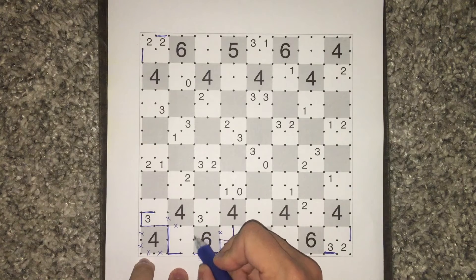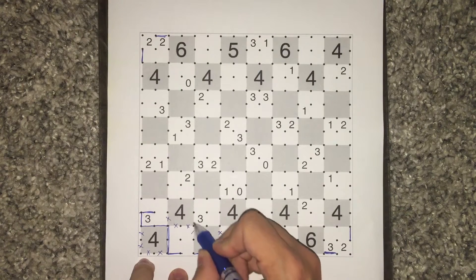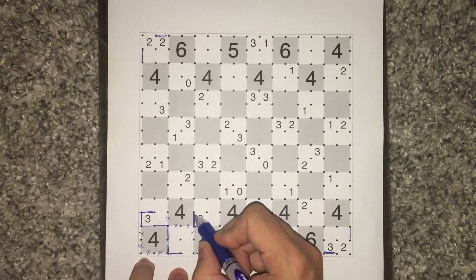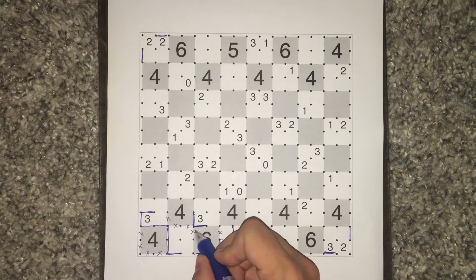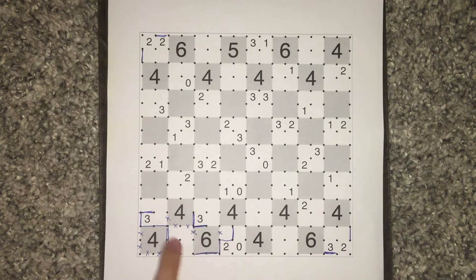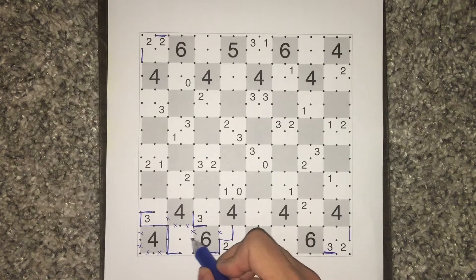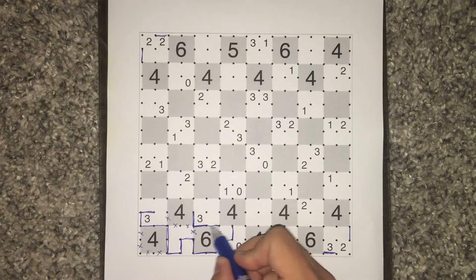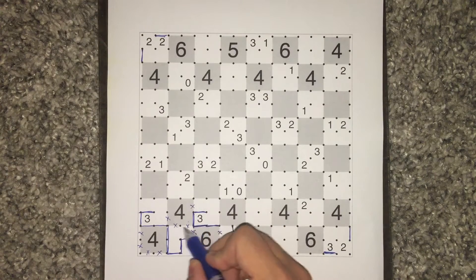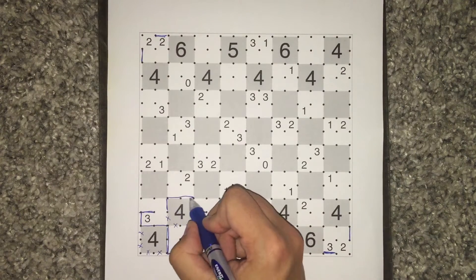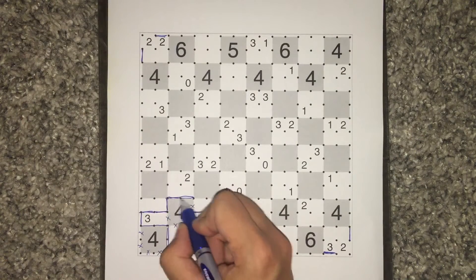We ultimately can't have something reaching into this corner point because the three is going to need to have both connections to it. So recognizing you don't get into the three, the deductions you can make is this so. This is the only way to fulfill the six. We actually now have marked off four unusable cells around this four.